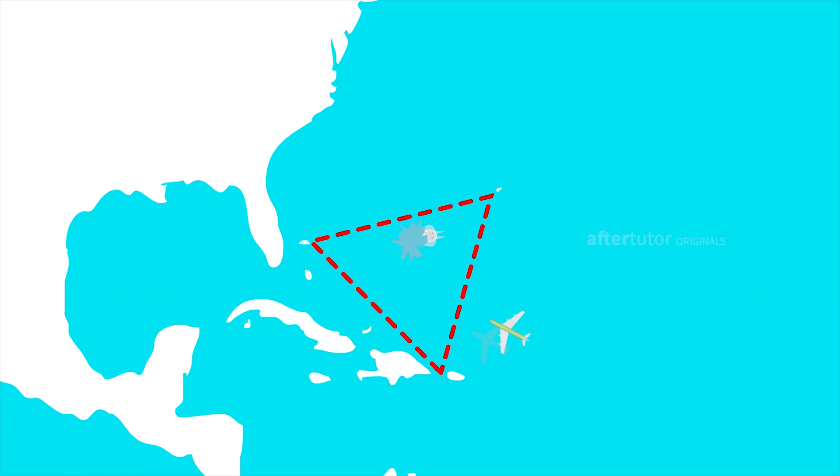Many of the ships, aircraft, went missing in this region, and the name Bermuda Triangle was coined in 1964.